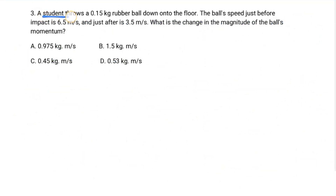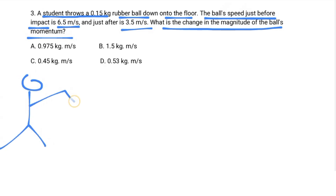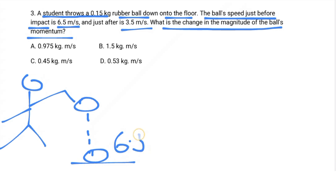Number three: a student throws a 0.15-kilogram rubber ball down onto the floor. The ball's speed just before impact is 6.5 meters per second and just after is 3.5 meters per second. Find the change in magnitude of the ball's momentum.